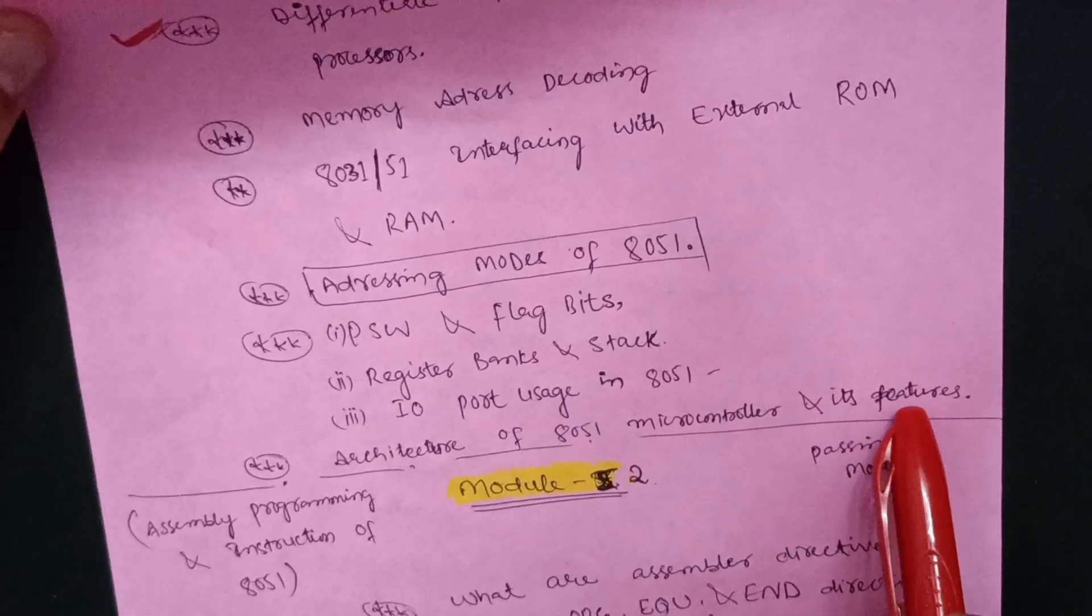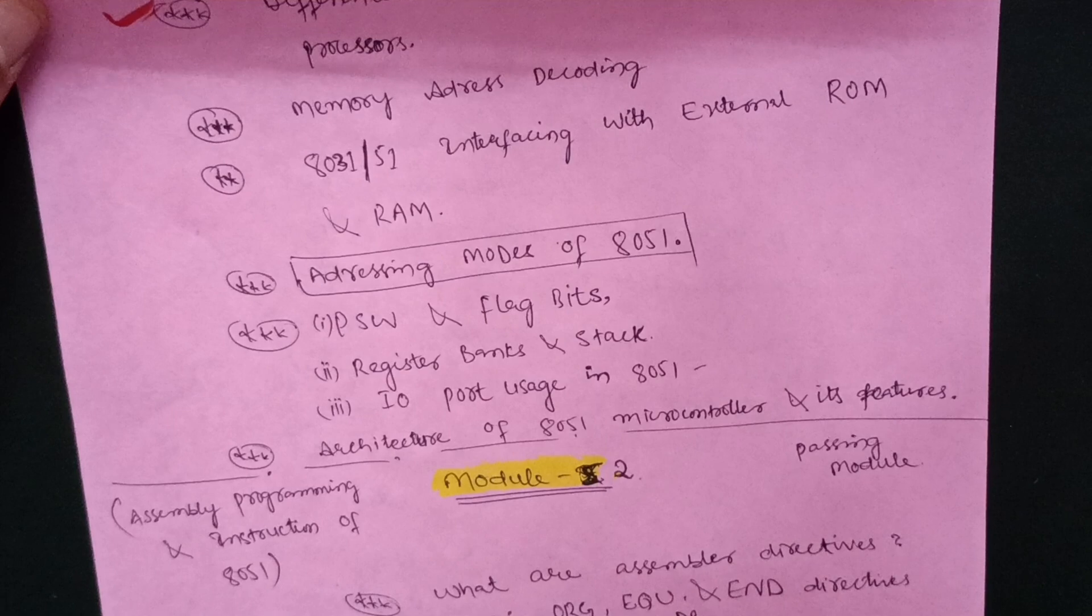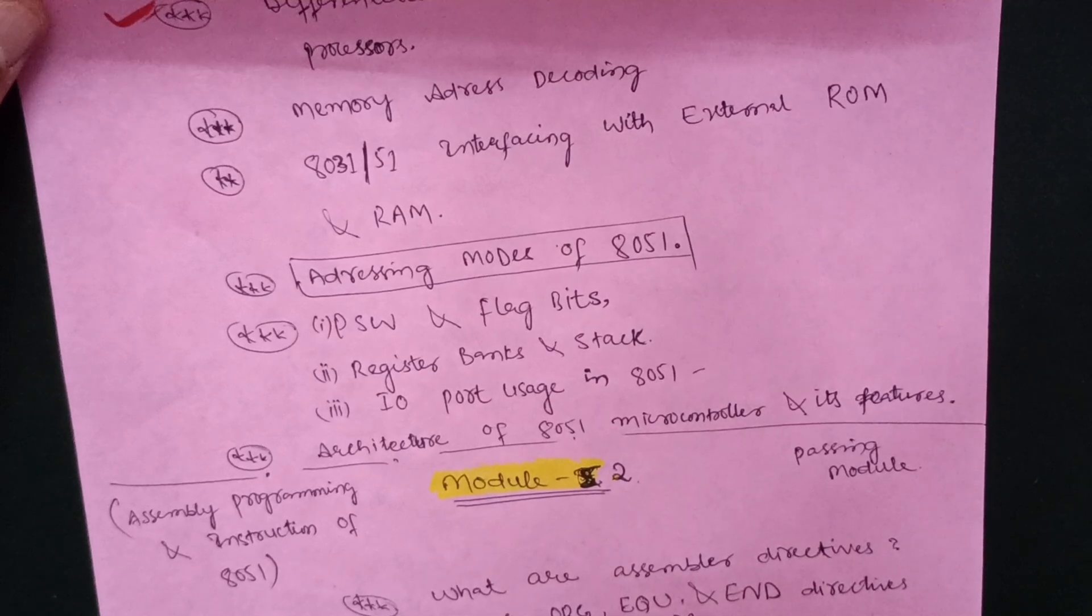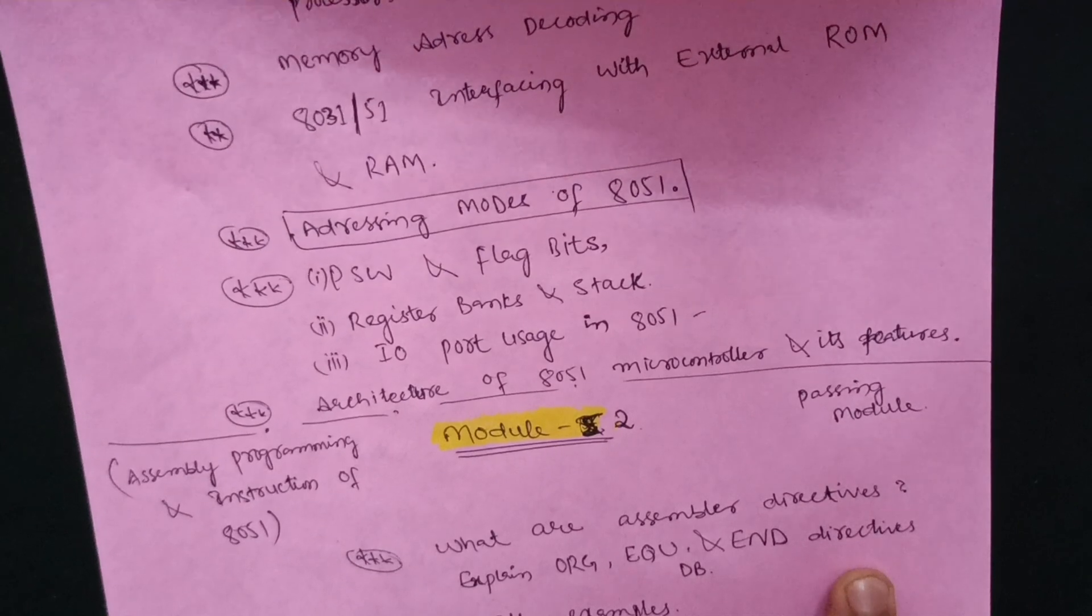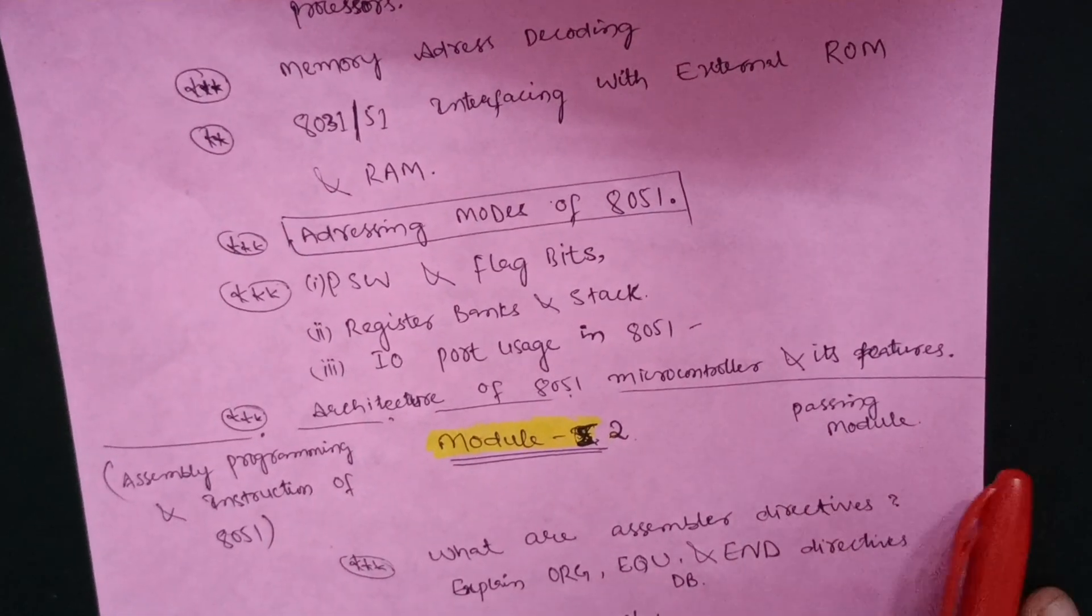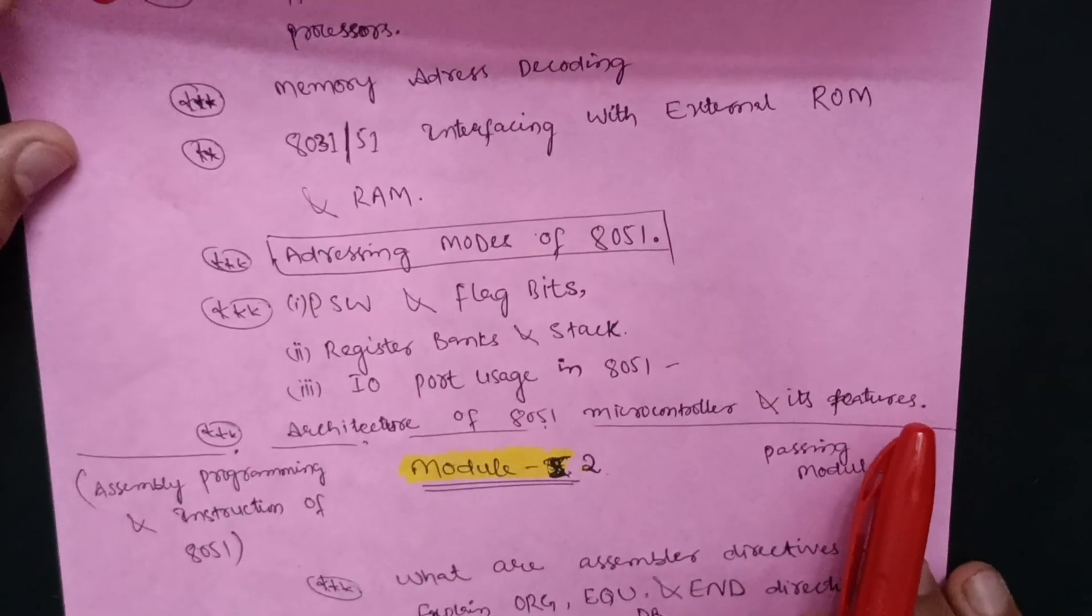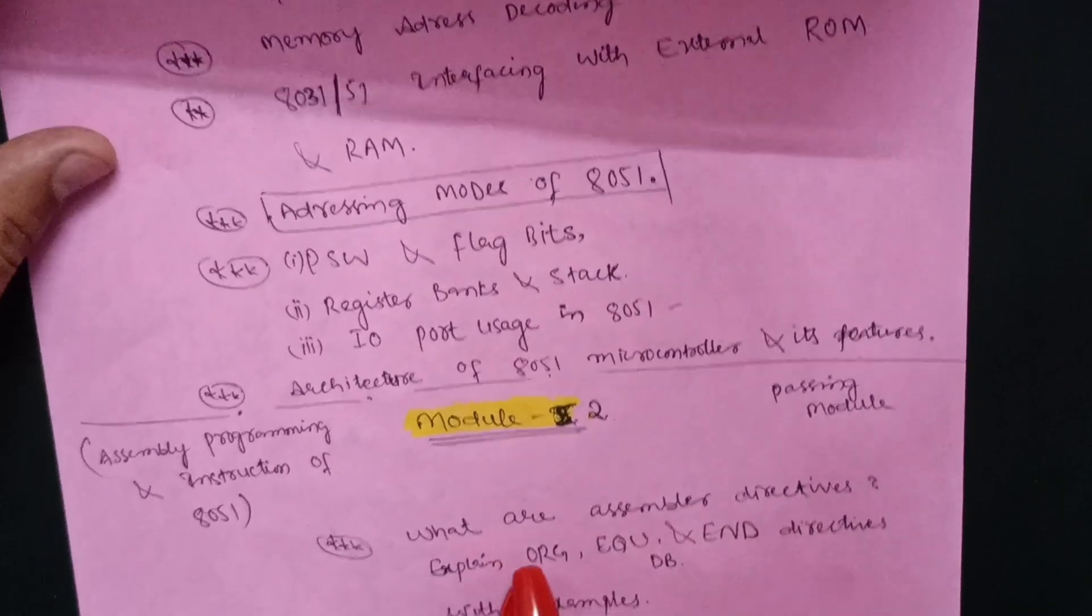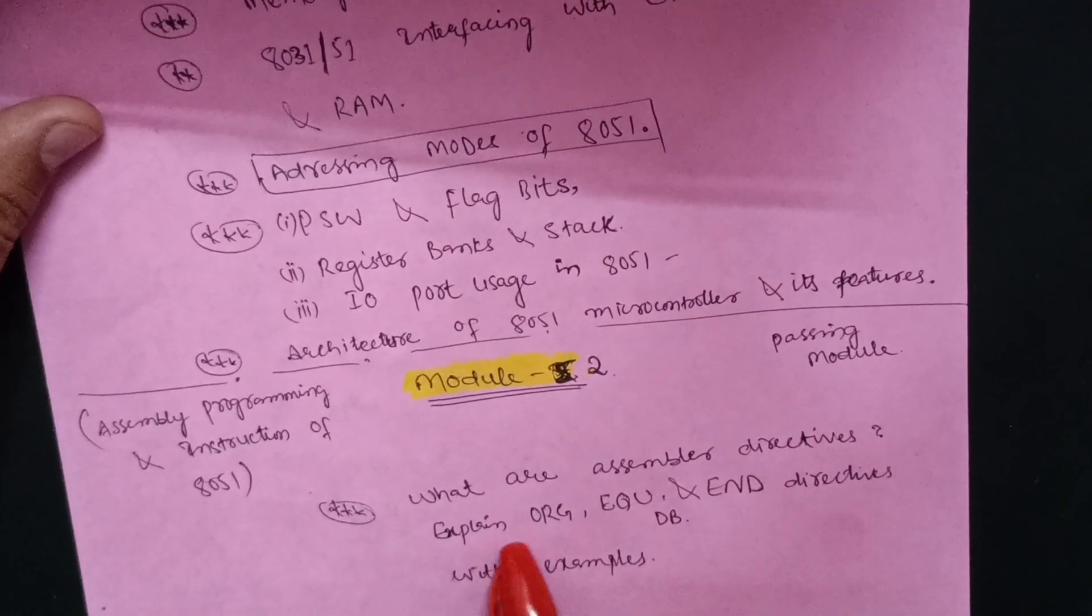Then Module 2 comes here. The programs also start in each and every module from the second module. Its name is assembly programming and instruction of 8051 microcontroller. It is also a passing module. You have to go through some theory questions and programs also. One of the important questions is what are assembler directives and explain.